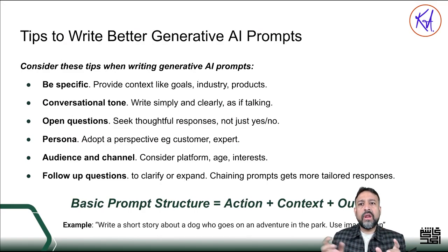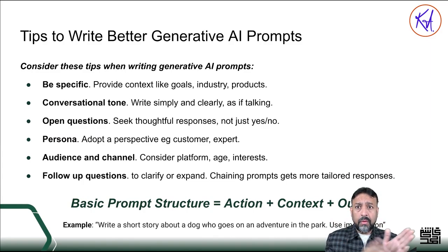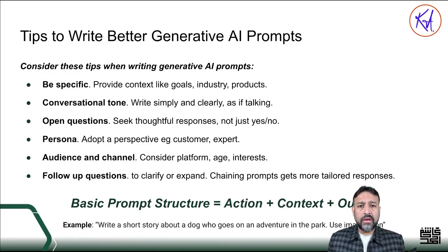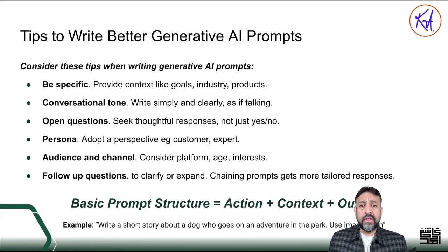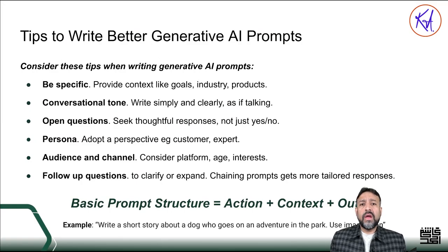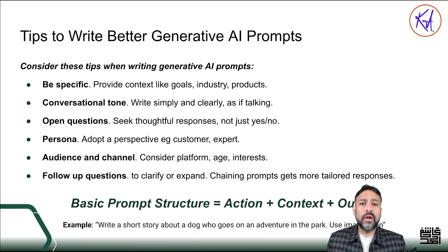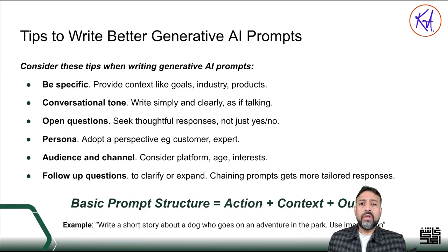More complex prompt structures exist, but this basic one is good enough to get started. For example: 'Write a short story about a dog' — that's the action. 'It goes on an adventure in the park' — that's the context. 'Use imagination' — that's the output style. If you don't follow these best practices, you may end up with hallucination, or you'll need to start grounding the response. Those are two terms you will hear a lot when working with large language models.